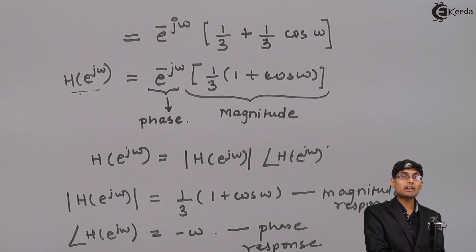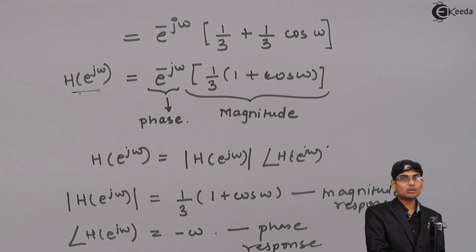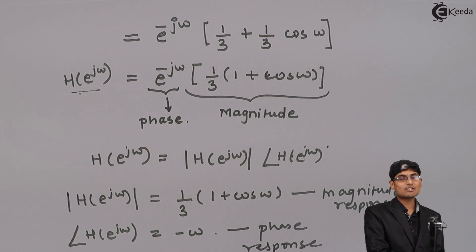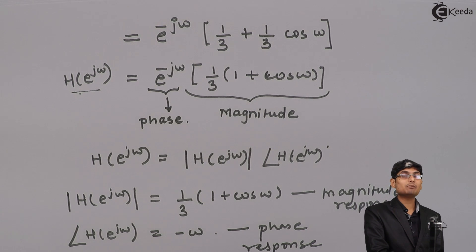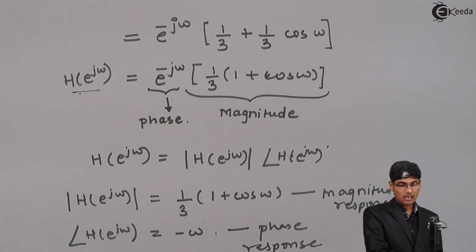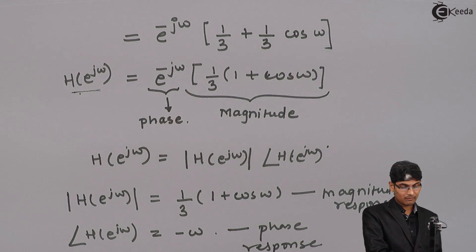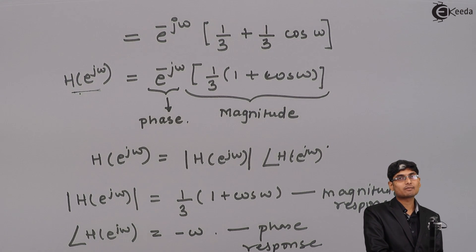To summarize: whenever such a problem is given, step 1 is to apply the Z transform, and step 2 is to replace z by e^(jω), then rearrange to obtain the magnitude response and phase response. Thank you.